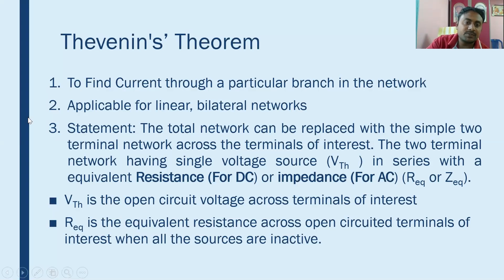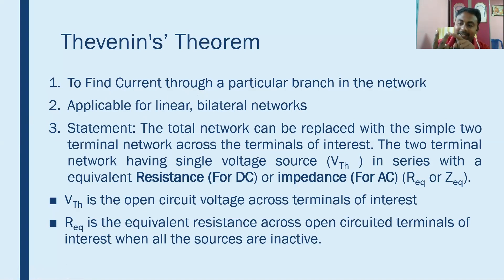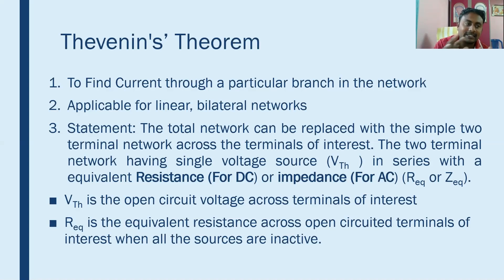This theorem is used to find the current through a particular branch in a network. In a network we have many number of branches; out of that we are going to find out only the current through a particular branch. It is applicable for linear and bilateral networks. It states that the total network can be replaced by a simple two-terminal network having a voltage source in series with a resistance for DC excitation, or an impedance for AC excitation.